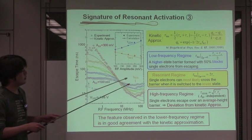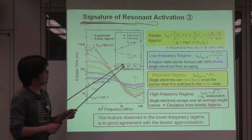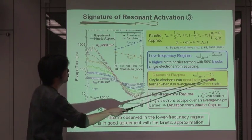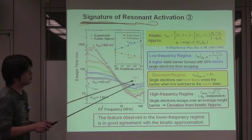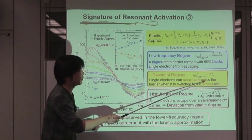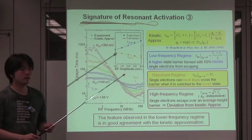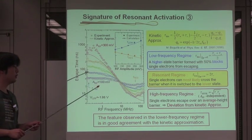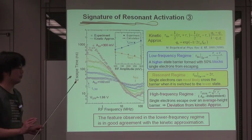This indicates a higher state of barrier formed with 50% probability blocks the single electron from escaping. On the other hand, tau resonance is well approximated with 2 tau minus. This implies the single electron can most likely choose the barrier when it is switched to a lower state. So this observed phenomenon can be intuitively understood, as I mentioned before.